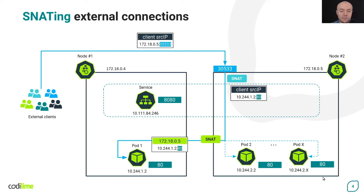Then, based on the configuration of the routing table on node 2, the next hop for the traffic was determined. It turned out that the pod's IP address belongs to the subnet reachable by node 1. Thus, the flows left node 2 and were sent towards node 1. Before that, however, source NAT is performed. The source IP address in outgoing packets, meaning the client's IP address, has been changed to the IP address of node 2.